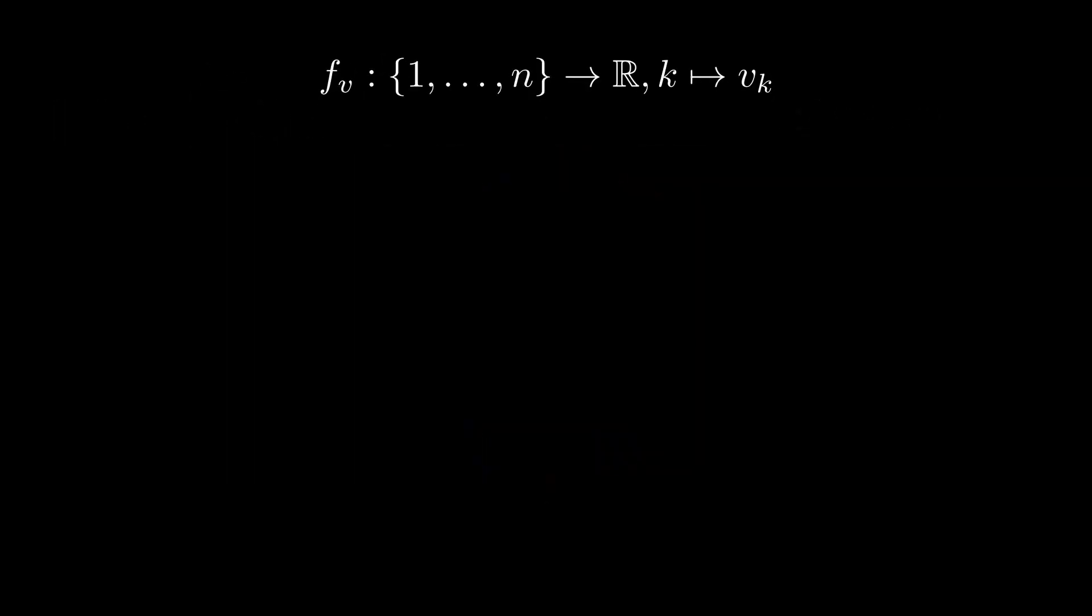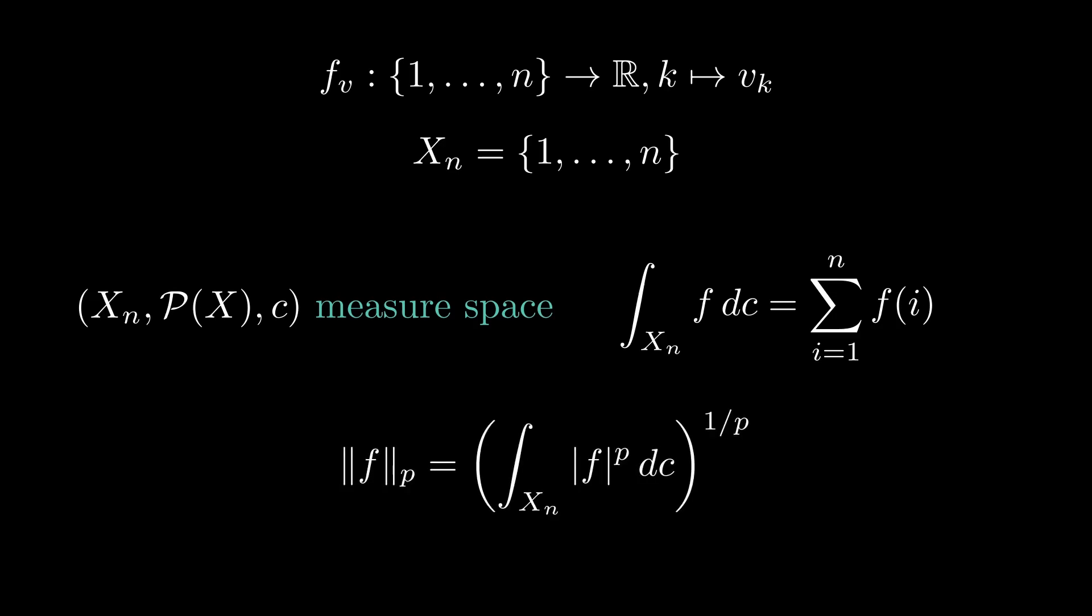Each n-dimensional vector can be interpreted as a function on the set of integers from 1 to n to the real numbers. Let's call the set of integers from 1 to n, xn. We may turn this set into a measure space with a counting measure. As integrating with respect to the counting measure is the same as summing over the entire domain, we may write the p-norms in integral form. In this form, the question naturally arises whether we are able to generalize this construction of norms to general measure spaces.